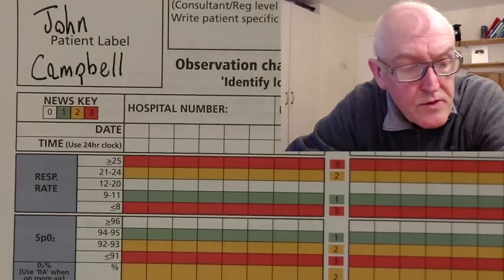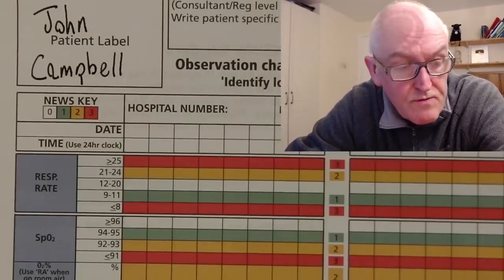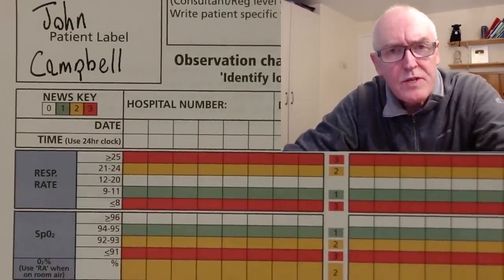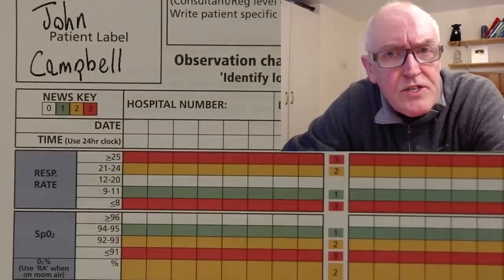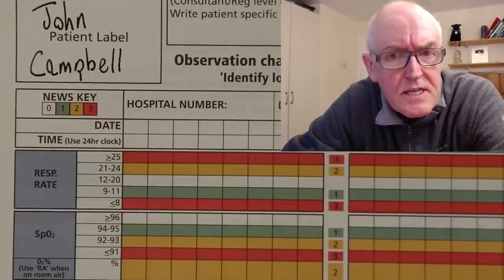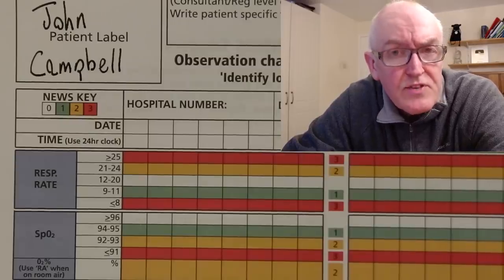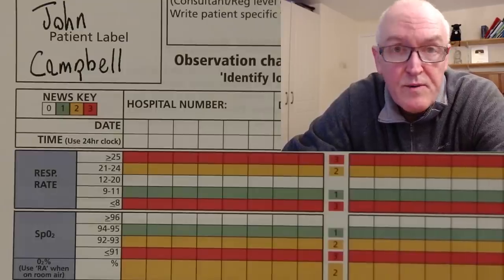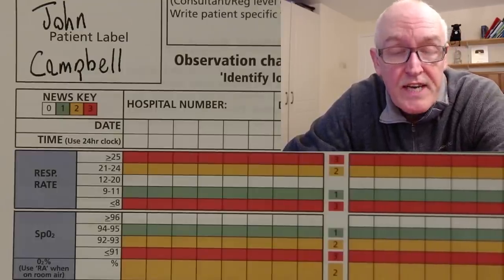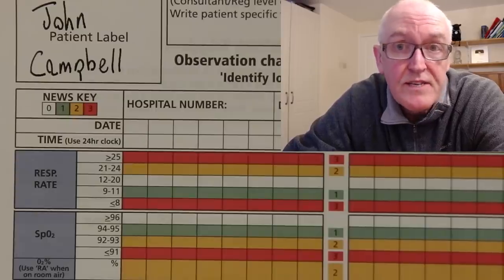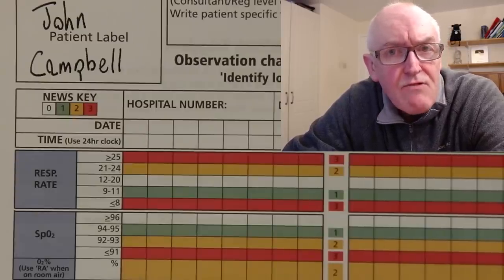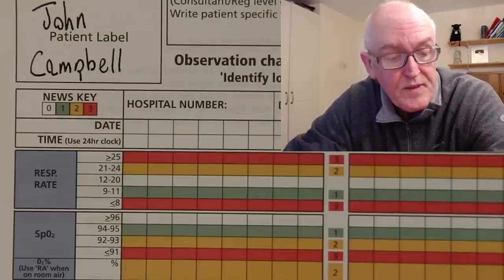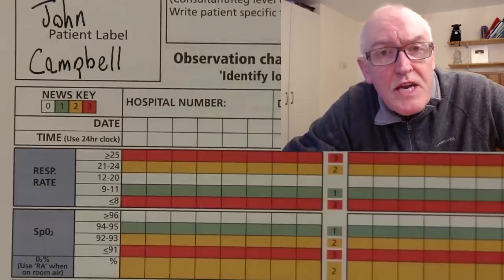In hospitals all over the world we use these observation charts or vital sign charts. We put the date and we put the time, because what's important when we're taking observations is not just what the physiological observation is but what trend it is following. For example, is the temperature going up? Is the heart rate going up? Is the blood pressure going down? Are the oxygen saturations going down? The trend is very important because it indicates the direction of travel of the patient's condition, the way the patient's condition is evolving.